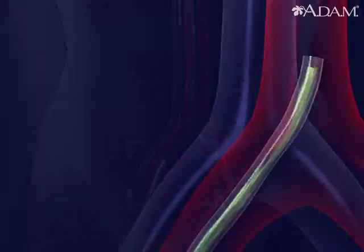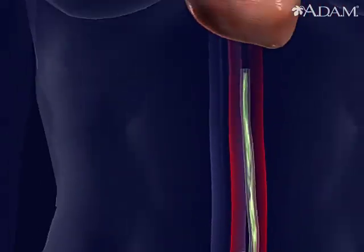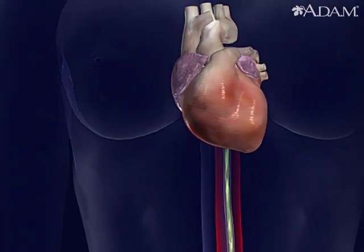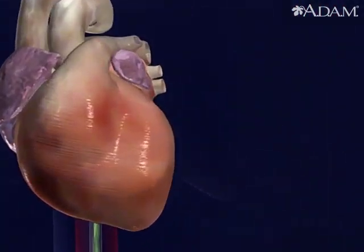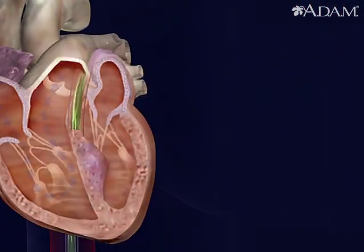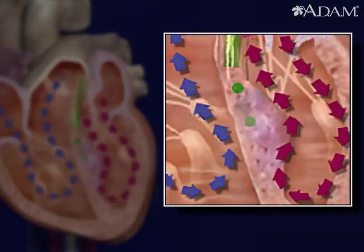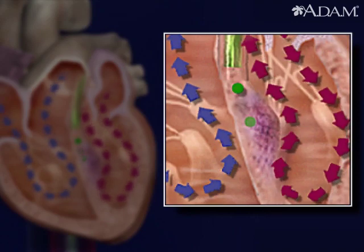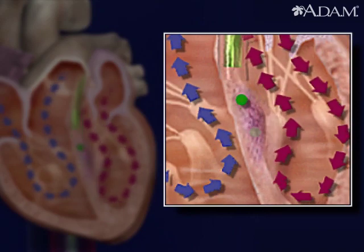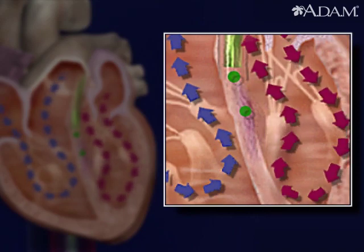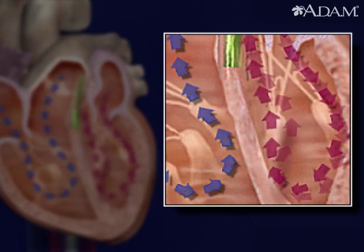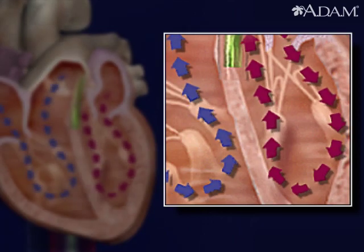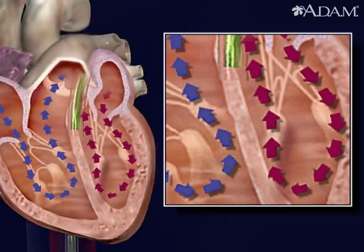To treat it, a catheter is inserted into the heart. It's used to apply concentrated alcohol that shrinks the diseased section. Now the heart can function normally.